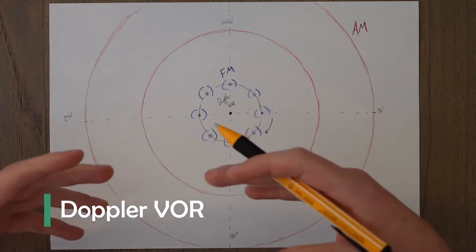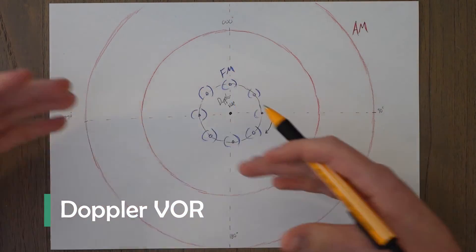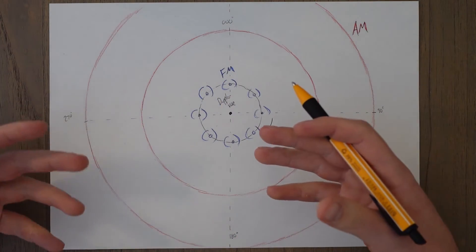A Doppler VOR provides the same sort of spokes on a wheel type information, but it achieves it in a different way.